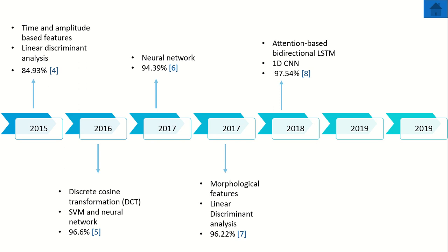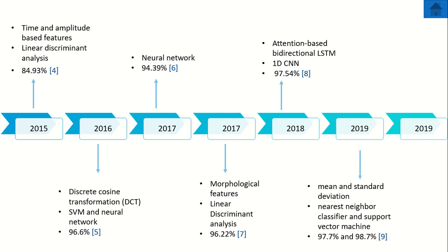In 2018, attention-based bi-directional long short-term memory (LSTM) and one-dimensional convolutional neural network were used, achieving a maximum accuracy of 97.54%. In 2019, mean and standard deviations were used for feature extraction; nearest neighbor classifier and support vector machines yielded accuracies of 97.7% and 98.7% respectively. Also in 2019, a two-dimensional convolutional neural network was used, yielding an accuracy of 88.57%.